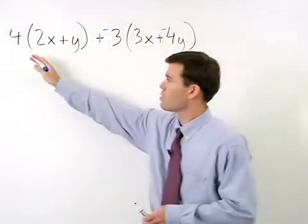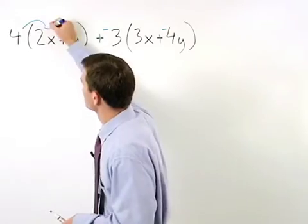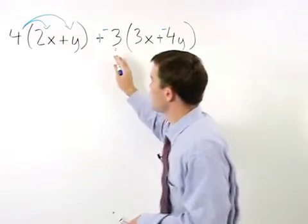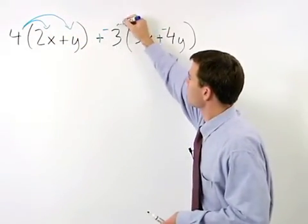Now we can distribute the 4 through the first set of parentheses and the negative 3 through the second set of parentheses.